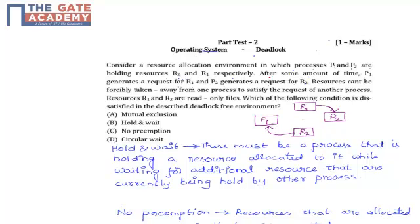After that, after some amount of time, P1 generates a request for R1. That means from P1 there is a request for R1. And P2 generates a request for R2.